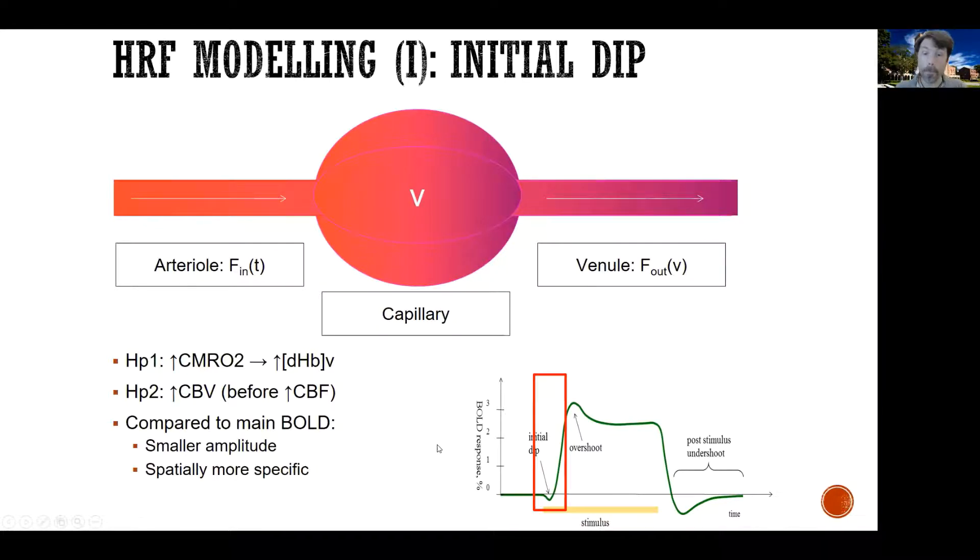Now, compared to the main BOLD response, which is what we're going to see next, this big deflection, it's much smaller in amplitude. In fact, it's even debated if we can truly see it or not with BOLD. Some studies show it, some studies don't quite see it. But spatially, it tends to be much more specific. So it would be amazing if we could do BOLD with this little dip, but it turns out to be pretty difficult to achieve.